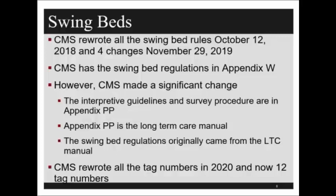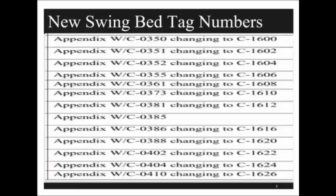They did rewrite all the tag numbers, and now there are 12 tag numbers for the critical access hospital. They do provide crosswalk information — for example, what was tag number 350 is now tag number 1600. The easiest way to find this is to go into the regulation from the transmittal, and it will show the differences.